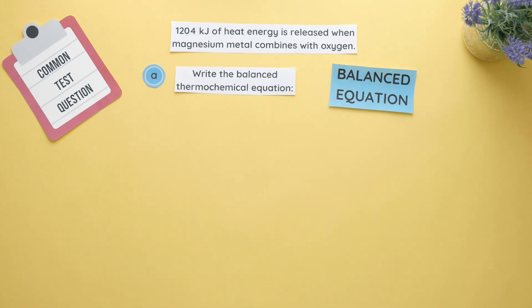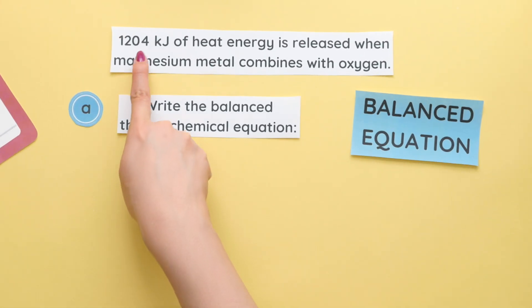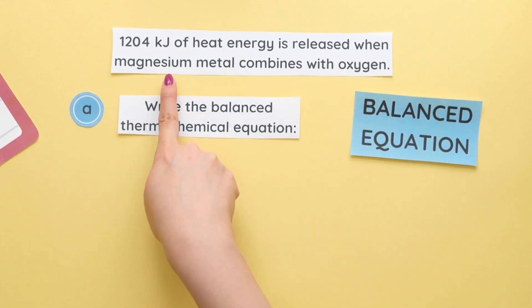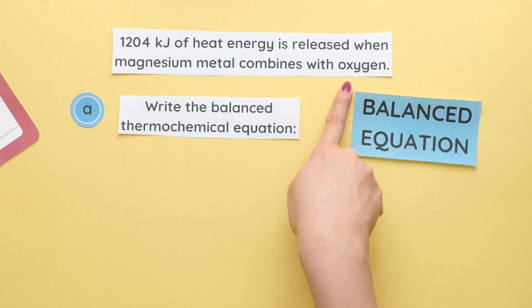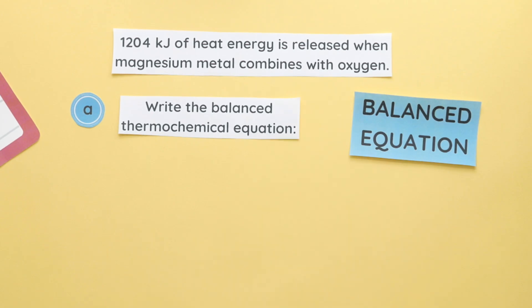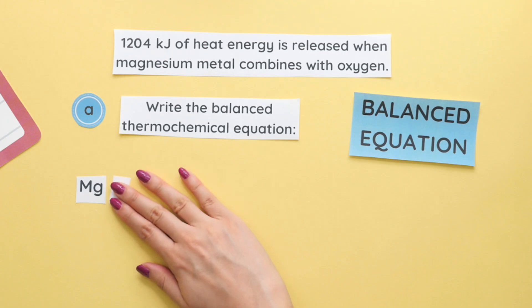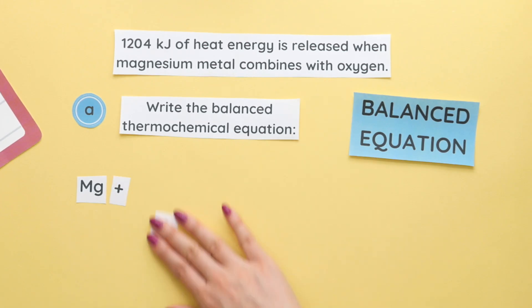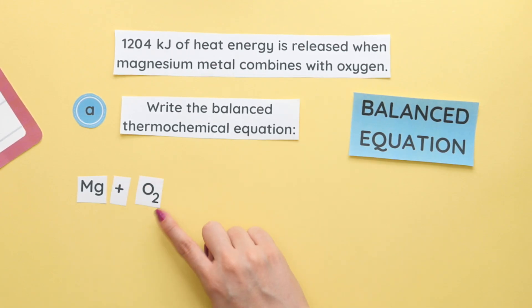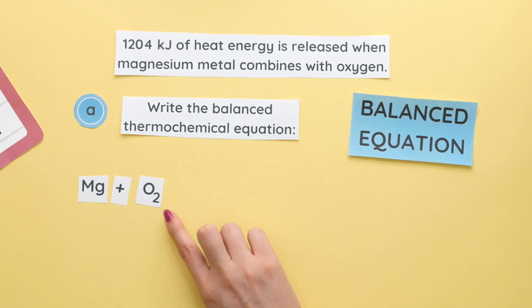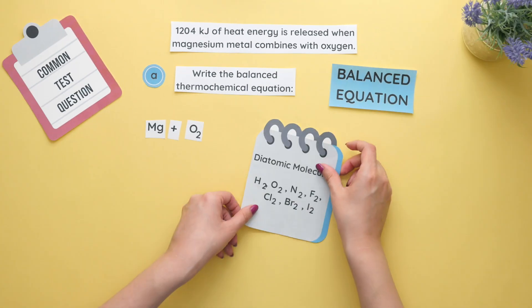Let's start with finding the balanced chemical equation for part A. Our question reads 1204 kilojoules of heat energy is released when magnesium metal combines with oxygen. This part translates into magnesium being our first reactant, combines meaning plus, and our second reactant is oxygen. Now we do not have just one oxygen. Instead oxygen has a two subscript. This is because oxygen is a type of diatomic molecule.